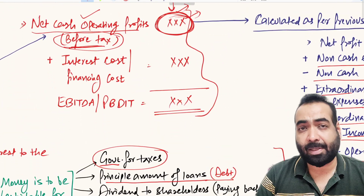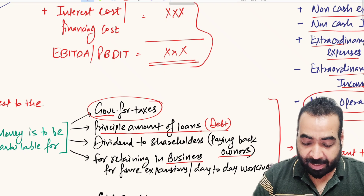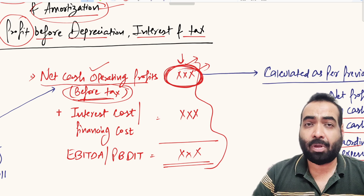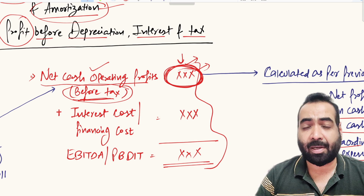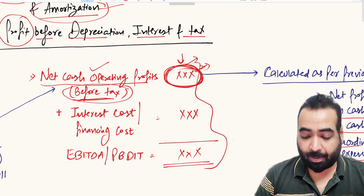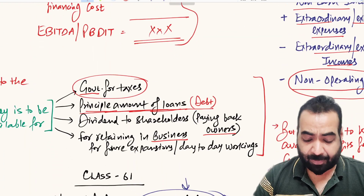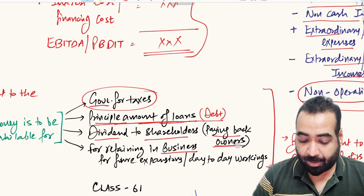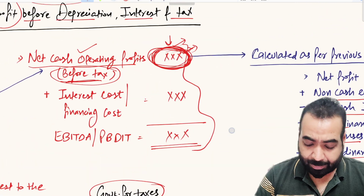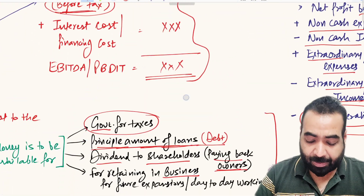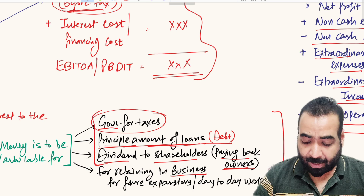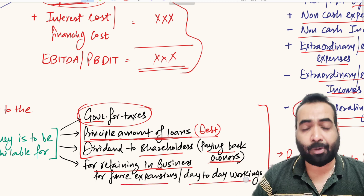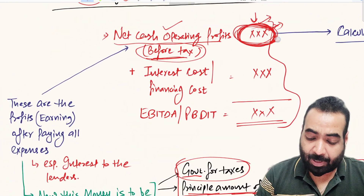This cash normal operating profit shall also be used to pay the principal amounts of loans, since the interest amount is already paid from this amount. If you want to pay back the principal, those funds must be arranged from the income of the entity. This amount shall also be used to pay dividends to shareholders or for any capital withdrawal. If anything is left after all these payments, that amount shall be retained in the business and used for future capex and day-to-day working capital requirements.